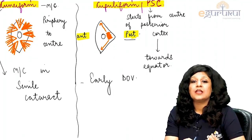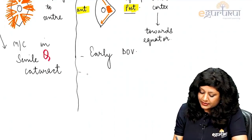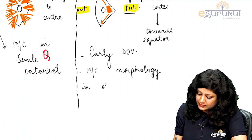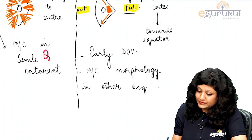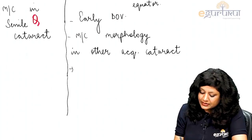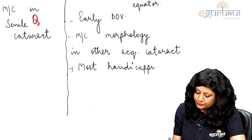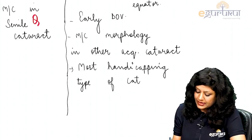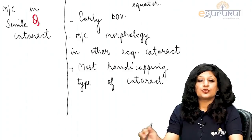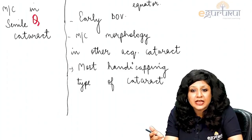In senile cataract the most common type is cortical, and within cortical the most common morphology is cuneiform. In other acquired cataracts, the most common morphology is the posterior subcapsular variety, and it is also the most handicapping type of cataract. So posterior subcapsular cataract causes early diminution of vision, is most common in other acquired cataract, and is visually the most handicapping.